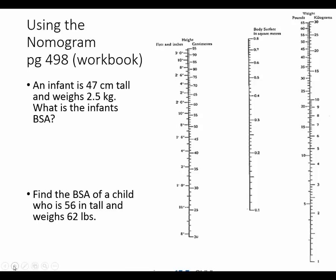The first nomogram that we're going to use is the child's nomogram, and I have an image of it here in the video, but I strongly encourage you to use the one on page 498 of your workbook. The first thing that we'll need to find is the child's height. The height is given as 47 centimeters. On the left-hand column there is height both in feet and inches and centimeters, so we'll go to 47 centimeters, which is approximately here.